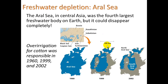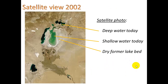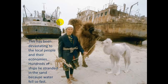For freshwater depletion, consider the Aral Sea in Central Asia — once the fourth largest freshwater body on earth, it could disappear completely. In 1960 it was large; by 1999 and 2002 it had gotten smaller and smaller. Why? Because water was being pulled out to irrigate cotton crops. A satellite view shows former waterline, very shallow areas, and cases where the water fell so quickly that boats were left stranded on dry land.